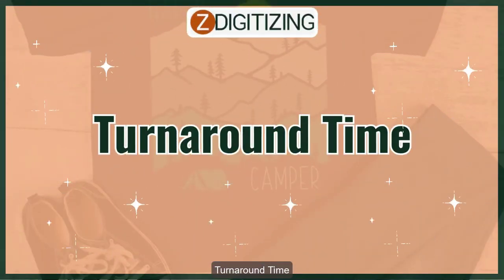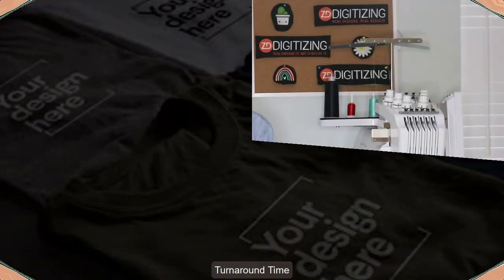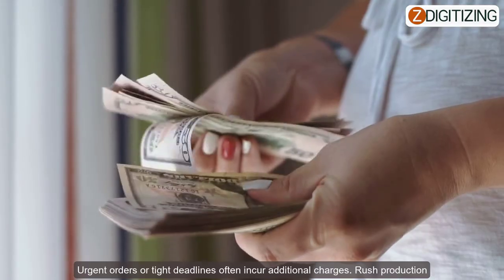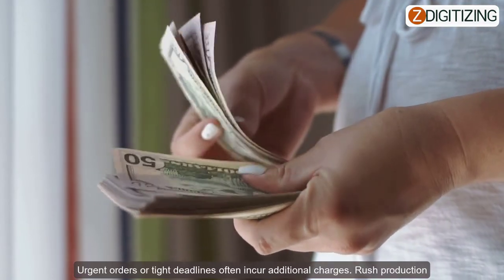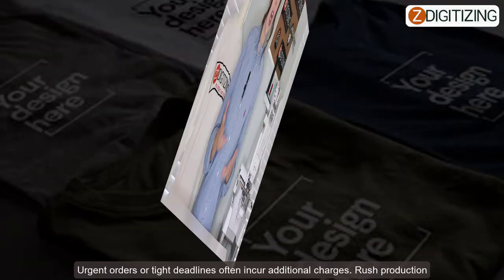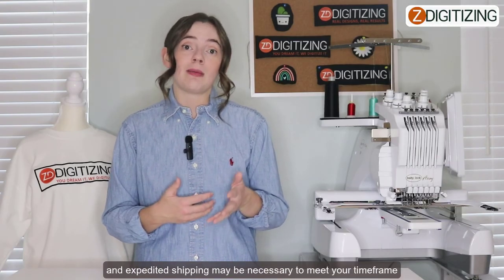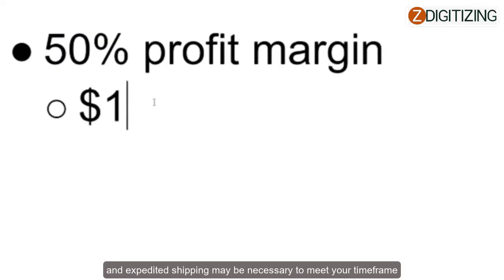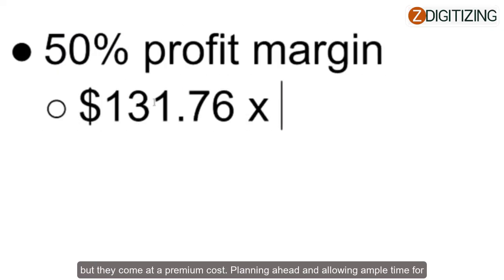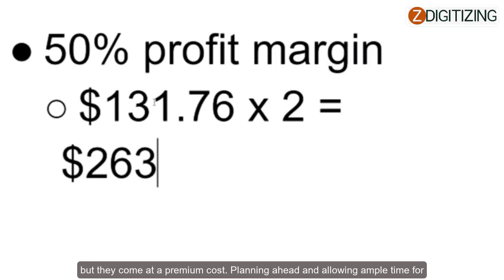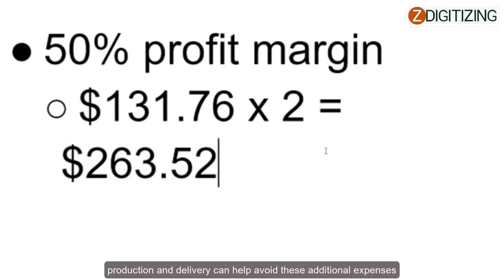Factor Number 8: Turnaround Time. Urgent orders or tight deadlines often incur additional charges. Rushed production and expedited shipping may be necessary to meet your time frame, but they come at a premium cost. Planning ahead and allowing ample time for production and delivery can help avoid these additional expenses.